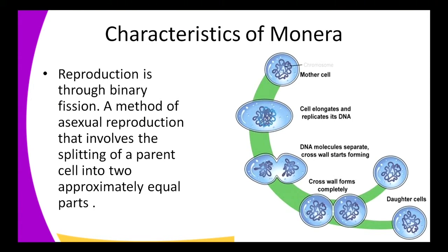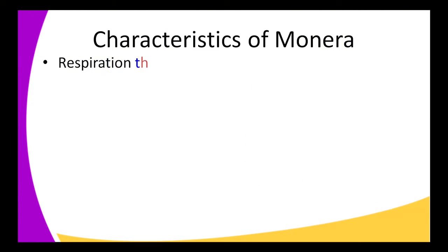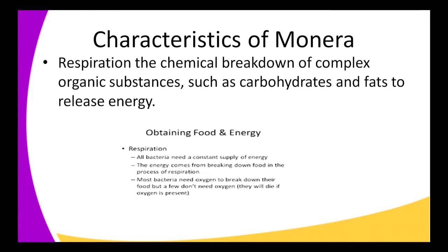Another characteristic of Monera is reproduction. They undergo asexual reproduction mainly through binary fission. This is a method of reproduction that involves the splitting of one parent into two approximately equal cells. The mother cell elongates, the DNA replicates inside the cell, and the DNA molecule separates across a cross wall, forming two pairs. Finally, the daughter cells are formed — the parent's DNA has been split between the two daughter cells.